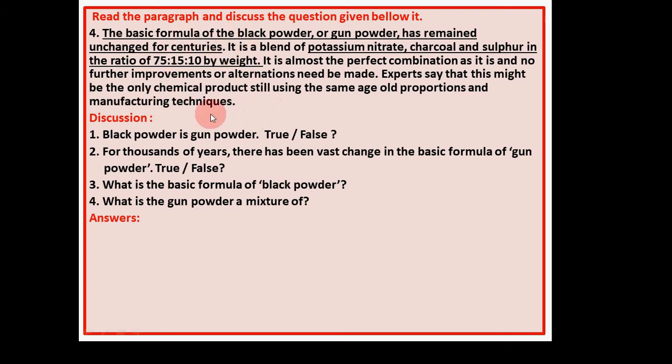So friends, this is the paragraph. You can see that some lines are underlined and those will be helpful to you to discuss these questions. That means answers are indirectly located. You have to discuss this. Number 1: Black powder is gunpowder. True or false? Then you can see here and decide.